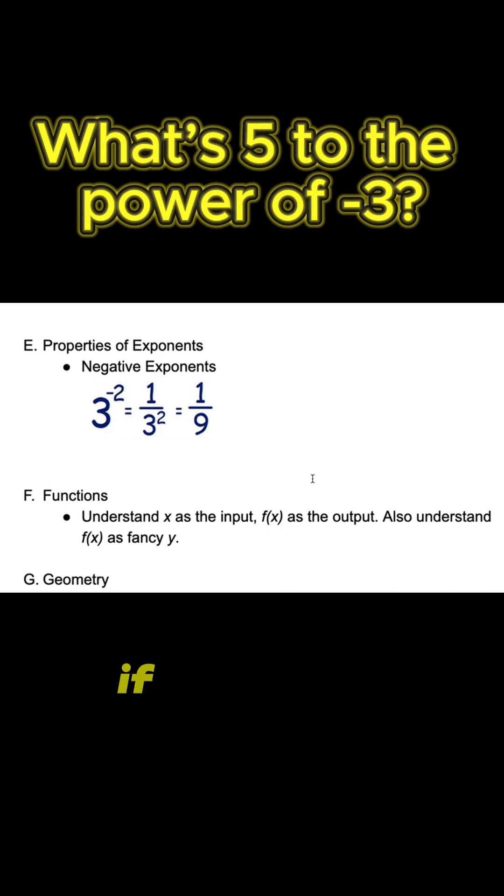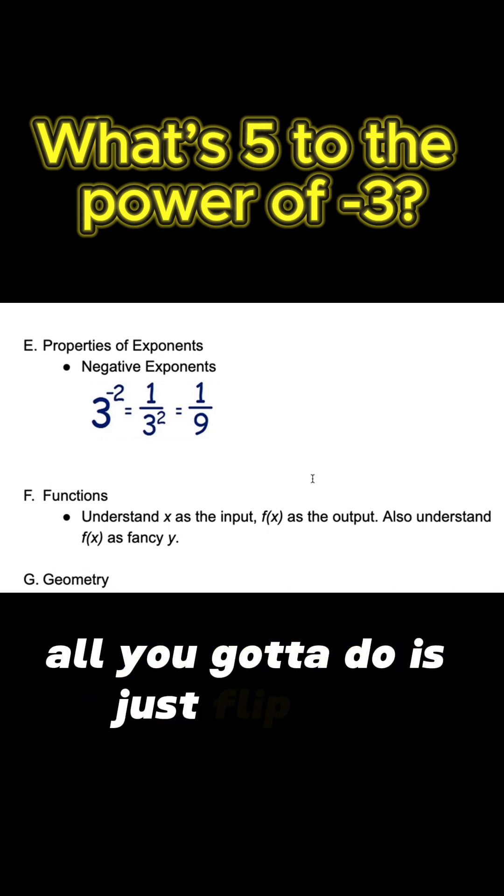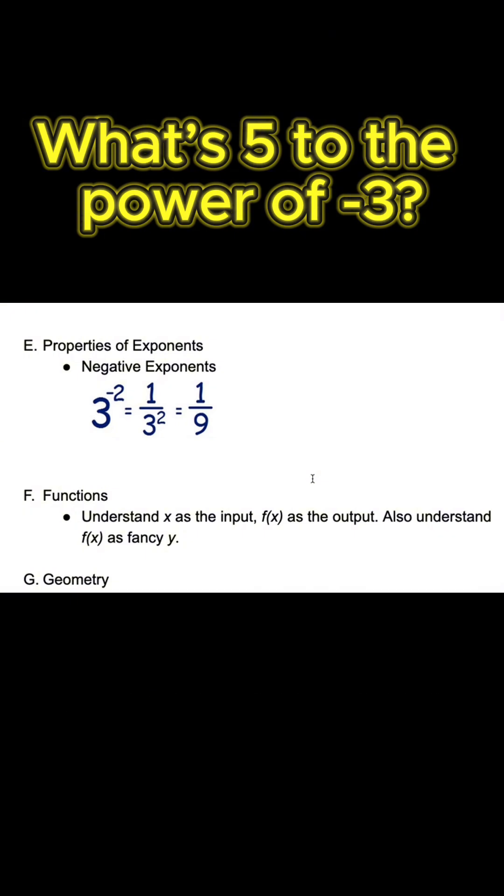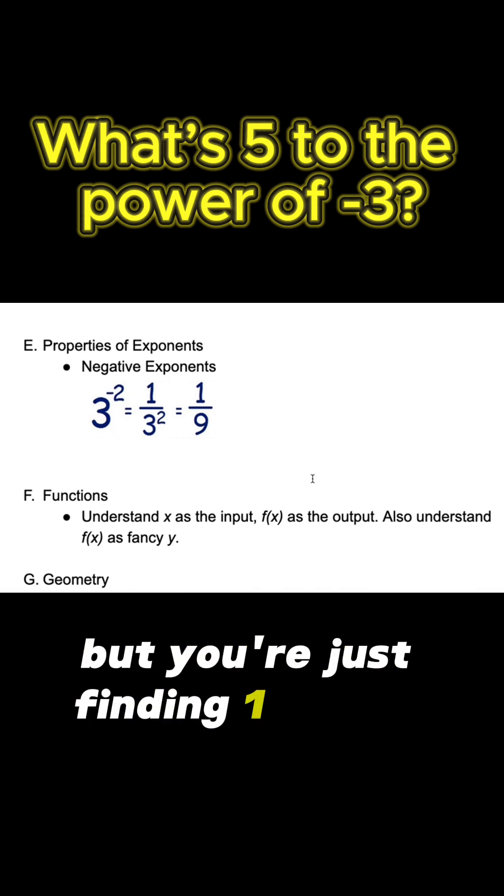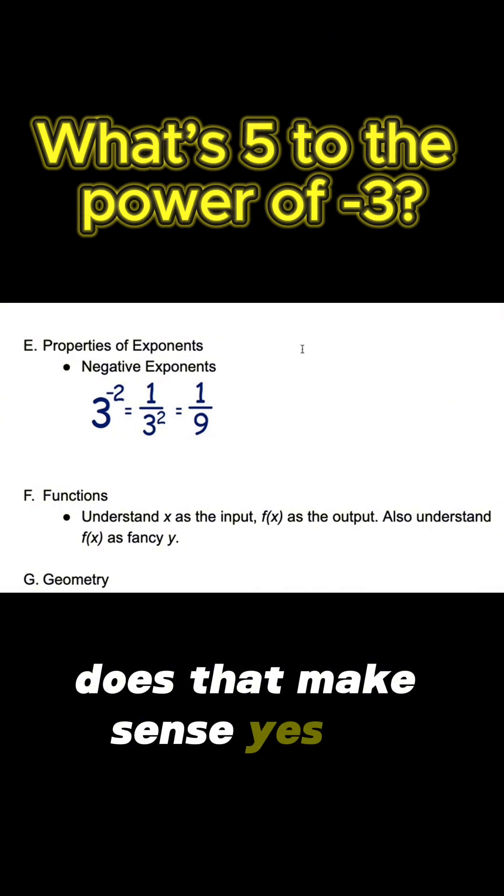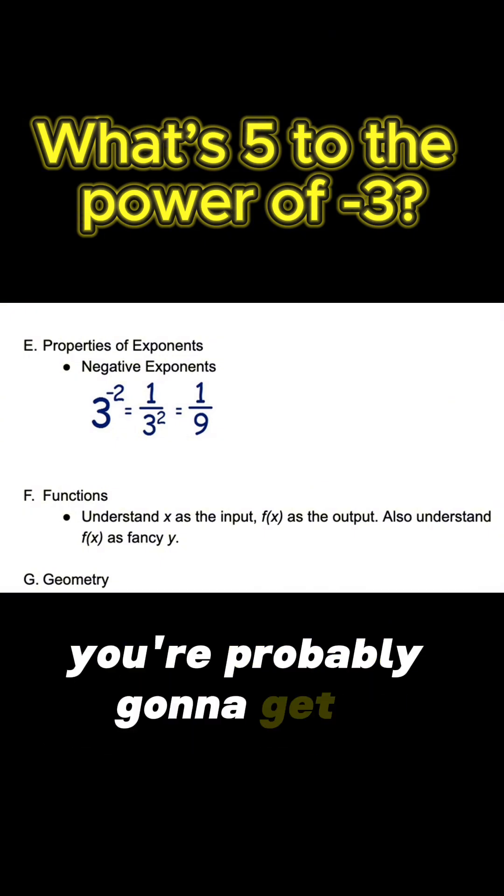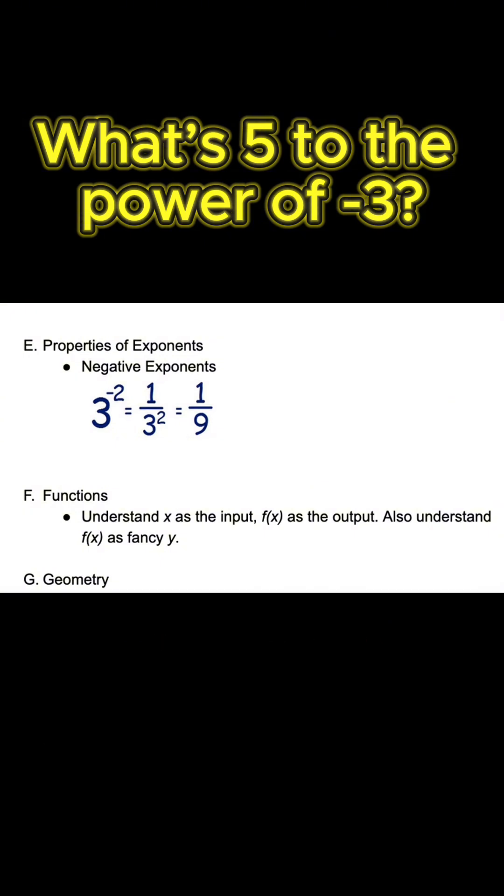So if you see a negative exponent, all you've got to do is flip the numerator and denominator. That's it. It's called the inverse. So you're still finding 3 squared, but you're finding 1 over 3 squared. Does that make sense? Yes, sir. If you see a negative exponent, you're probably going to get a fraction.